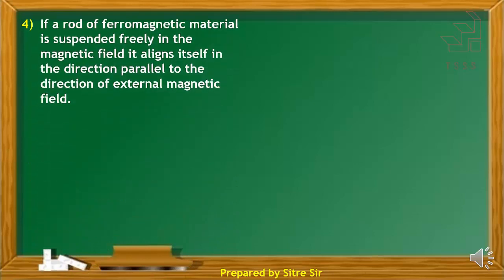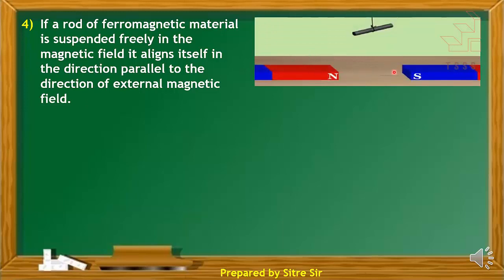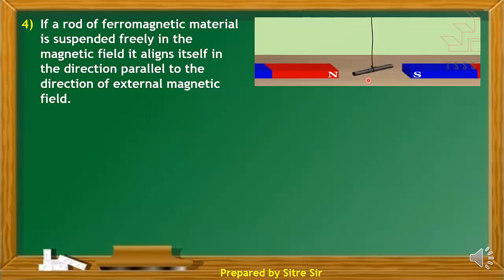Next property: if a rod of ferromagnetic material is suspended freely in a magnetic field, it aligns itself parallel to the direction of the external magnetic field. The freely suspended rod aligns parallel to the north-south pole direction of the external magnetic field.